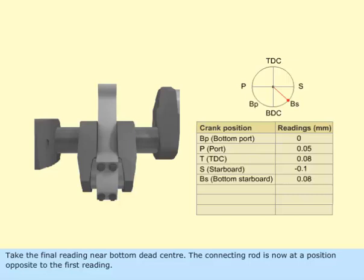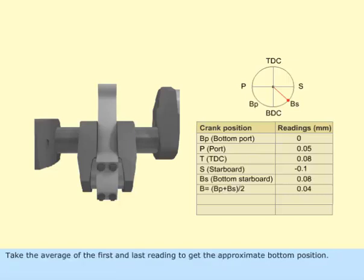The connecting rod is now at a position opposite to the first reading. Take the average of the first and last reading to get the approximate bottom position.